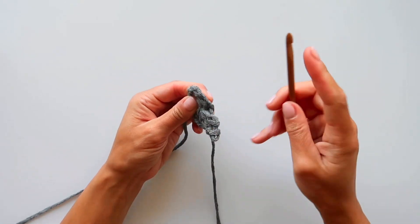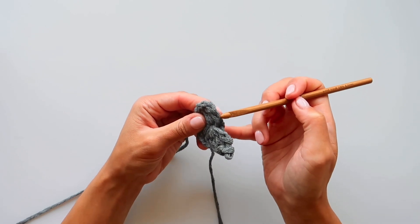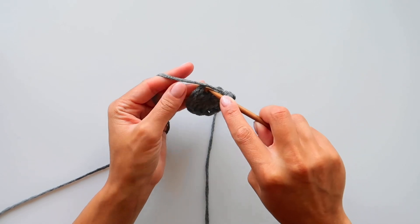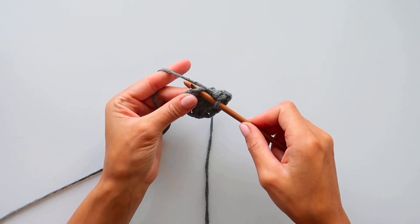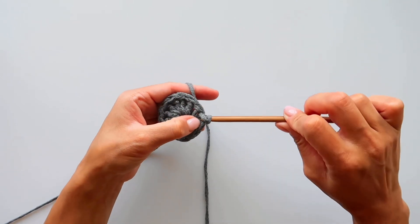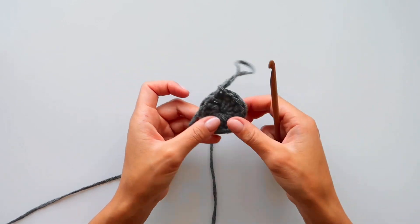And now we will connect the ring. So in the second stitch we will insert the hook and do a slip stitch. So insert the hook, grab the yarn, and with that loop we will pull through like this.